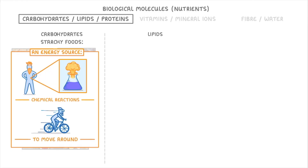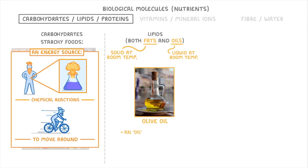Next we have lipids, which is kind of a confusing term because in everyday life we just refer to them as fats. But actually lipids refers to both fats and oils, with fats being lipids that are solid at room temperature and oils being lipids that are liquid at room temperature. For example, olive oil would be considered an oil rather than a fat because it's a liquid at room temperature, but you could also call it a lipid because all fats and oils count as lipids.